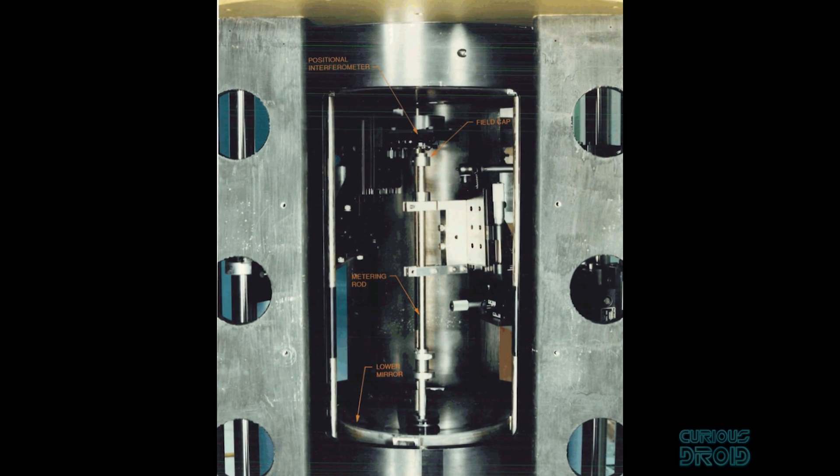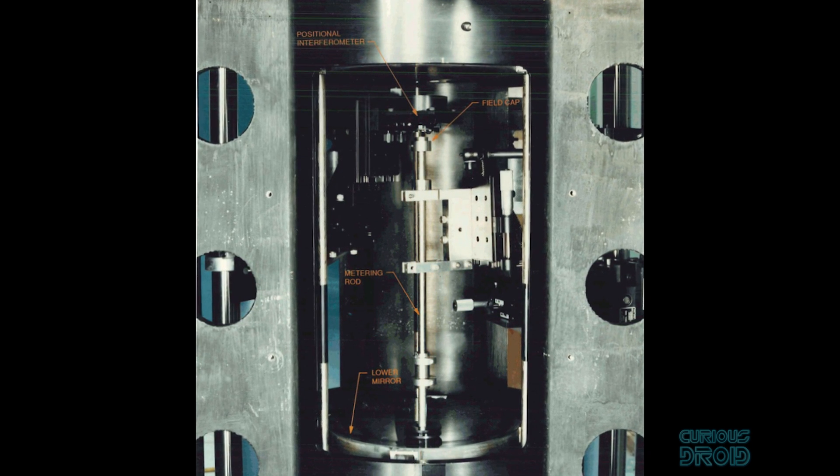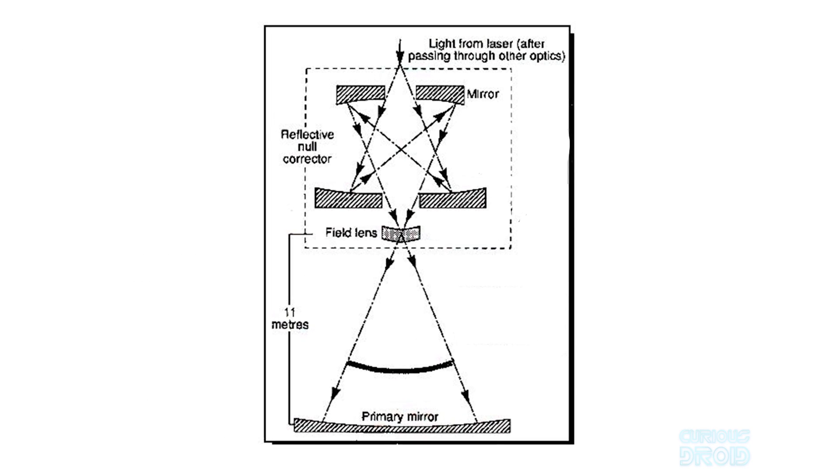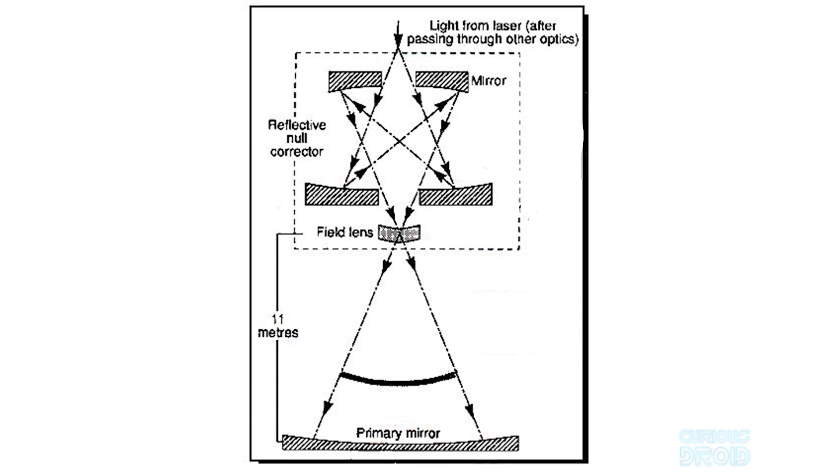The RNC was a cylinder 76 centimeters (2.5 feet) high and about half a meter (1.5 feet) wide. Inside, two mirrors and a lens were arranged to create a wavefront on the Hubble primary mirror below.